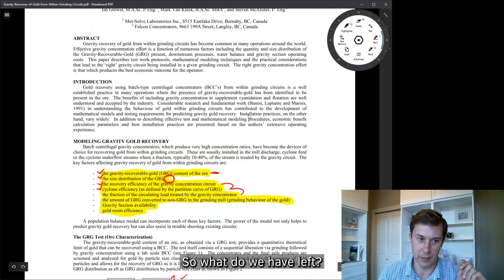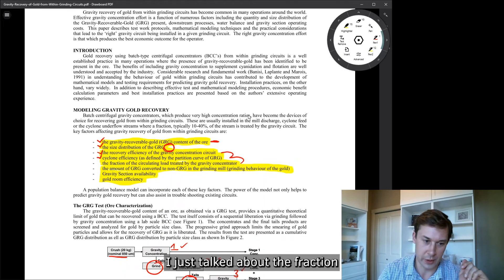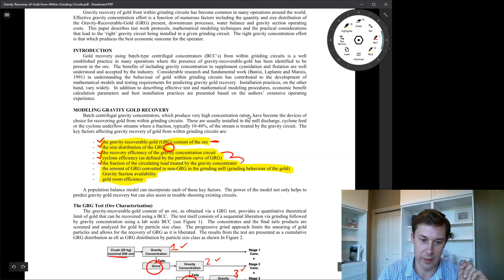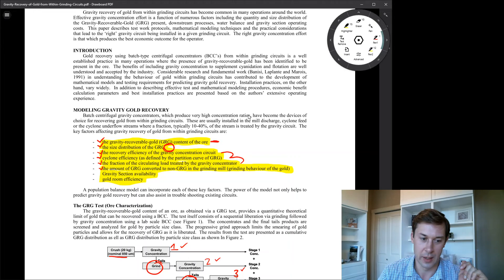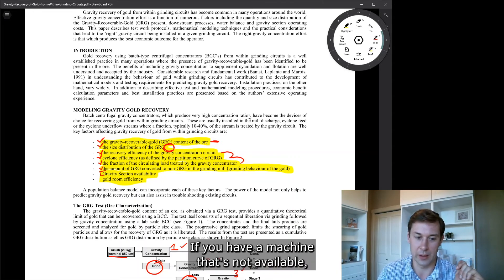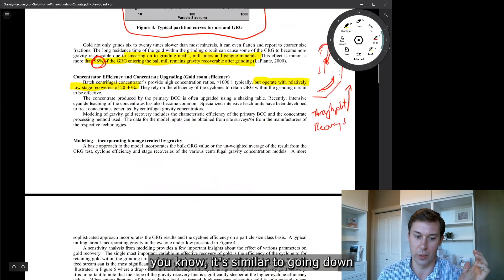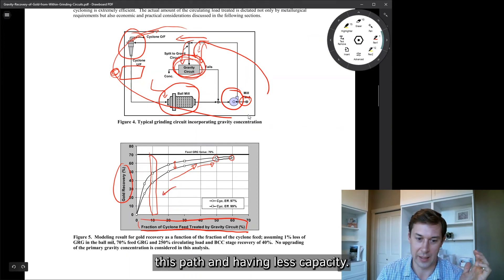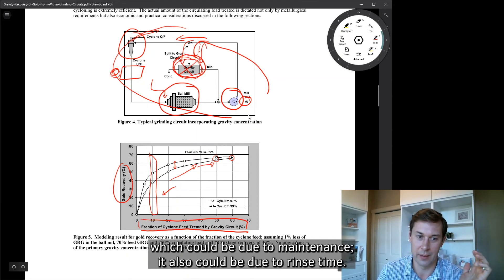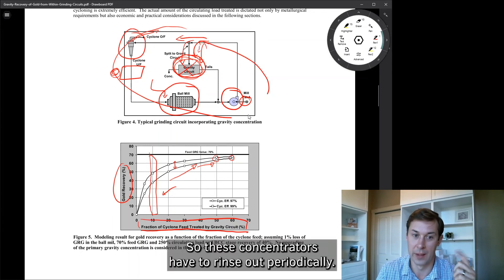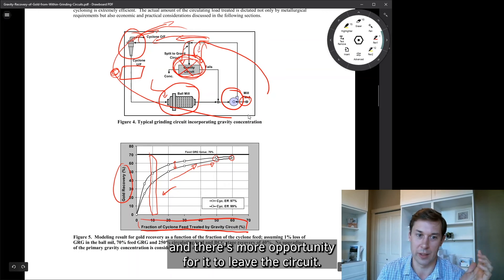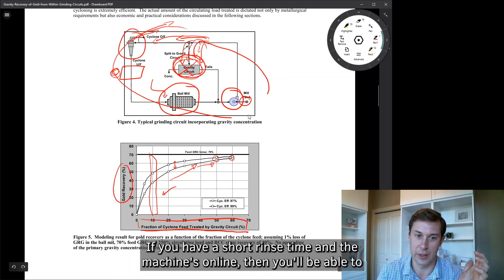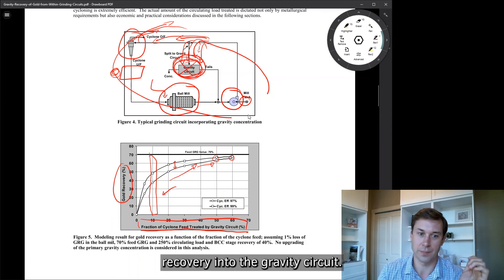So what do we have left? Just talked about the fraction circulating load treated by the gravity concentrator. We talked about the amount of GRG converted to non-GRG. Gravity section availability. So this is where we get into more practical considerations of operation. If you have a machine that's not available, it's similar to going down this path and having less capacity. So it means the concentrator's offline, which could be due to maintenance. It also could be due to rinse time. So these concentrators have to rinse out periodically. If you have a long rinse cycle, you're going to have material bypassing and there's more opportunity for it to leave the circuit. If you have a short rinse time and the machine's online, then you'll be able to get higher recovery into the gravity circuit.